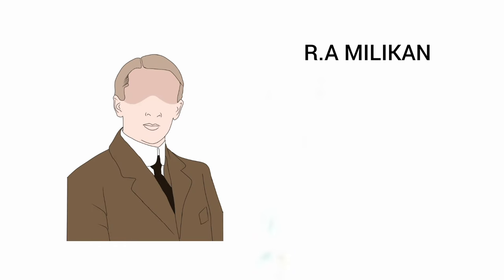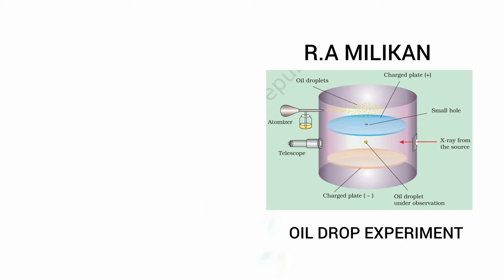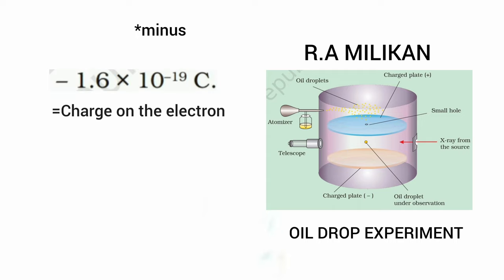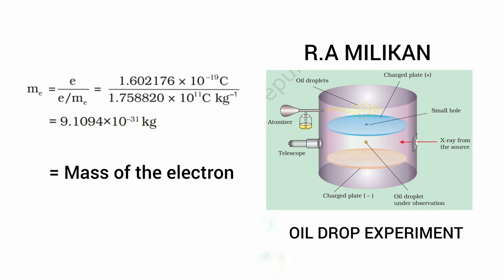Later, in the year 1909, R.A. Millikan did an experiment called the Oil Drop Experiment, from which he found the charge on an electron to be 1.6 × 10⁻¹⁹ coulomb. The present accepted value of electrical charge is 1.6022 × 10⁻¹⁹ coulomb. He found the mass of the electron by combining these results with Thomson's value of the E/M ratio. The mass of an electron was found to be 9.1094 × 10⁻³¹ kg.